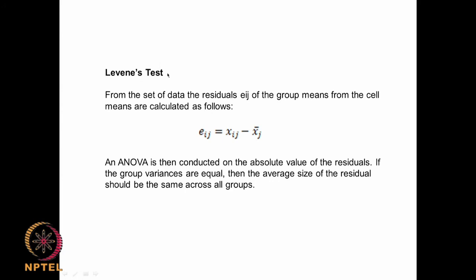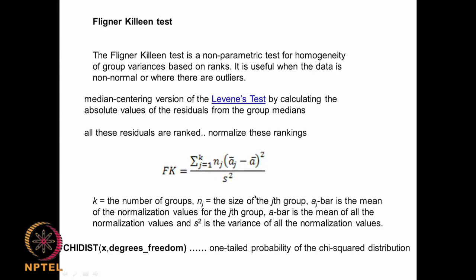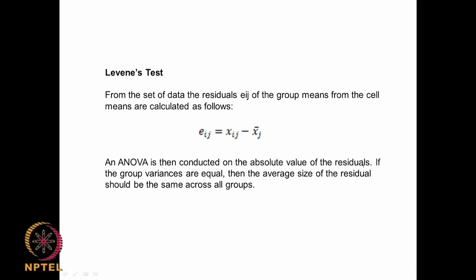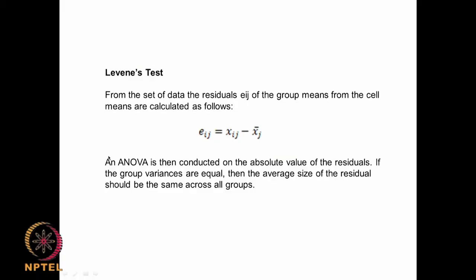Levene's test works as follows: you have a set of data, calculate the residuals from the group means — subtract the group mean from each cell value to get the residual — and then perform an ANOVA on the absolute values of those residuals. If the group variances are equal, the average size of the residuals should be the same across all groups. We can perform ANOVA for two or three datasets and then conclude whether H0 is satisfied or not.